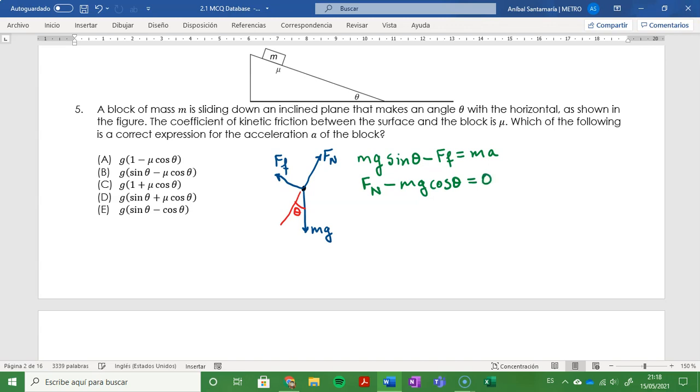This means that the first equation can be written in the form: mass times acceleration is equal to mg sine theta minus mu times the normal force, and the normal force is equal to mg cosine theta.